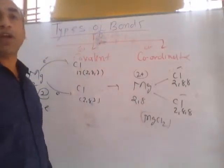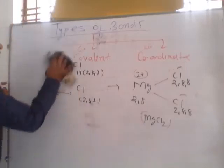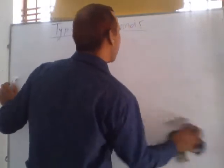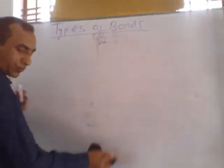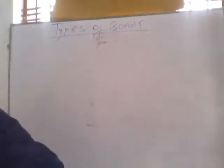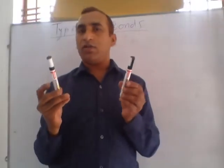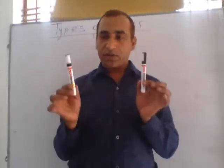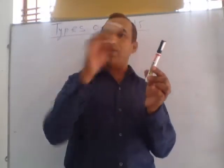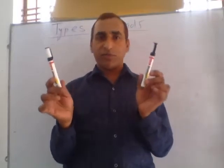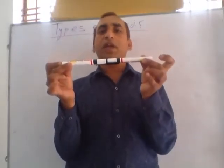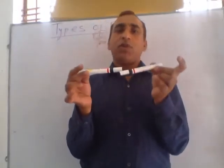The second type is covalent bond. Co means equal and valent means valency. If two elements share their valence electrons — the case is sharing, not transferring — suppose these are two elements, each sharing one electron, by sharing one electron the pair becomes two, and there will be one single bond. This is called a covalent bond.